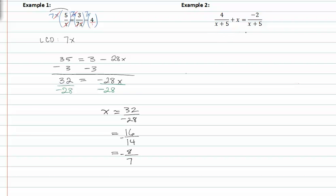In example two, we have a binomial in the denominator. Our LCD is then x plus five. This is a grouped binomial. Since x has no denominator, we assume it to be one, and we don't worry about that.